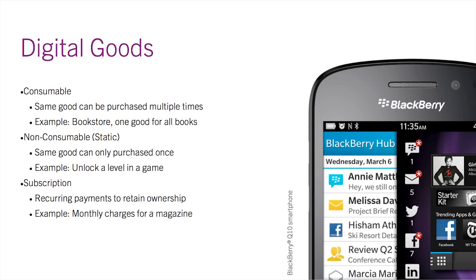Non-consumable or static goods are good for items that only need to be purchased once, like unlocking a level in a game. And finally, subscriptions are great if your application provides an ongoing service. This type of digital good will charge the user on a recurring basis. Currently, this can be done at seven or 30-day intervals.